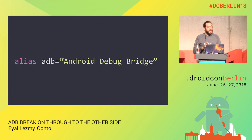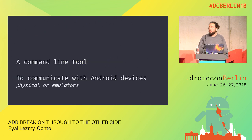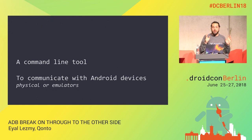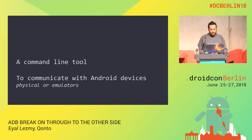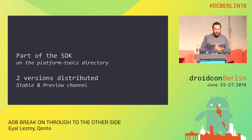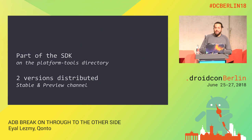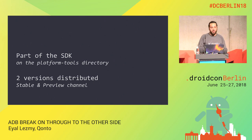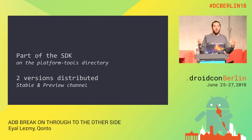ADB stands for Android Debug Bridge. It's a command line tool that allows you to communicate with a device. These Android devices can be physical — real hardware devices — or emulators. ADB is part of the SDK; you can find it in the platform-tools directory. There used to be two versions distributed, including a preview channel that I haven't seen for about a year, but it could come back.